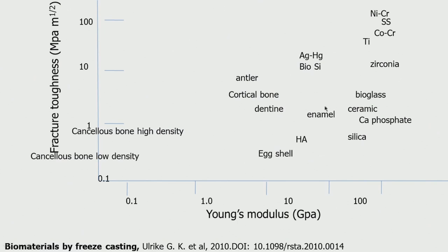Compared to bone or dental material — whereas if you take metals like nickel, chromium, stainless steel, they have very high Young's modulus and very high fracture toughness. Zirconia is not bad — it is coming up in fracture toughness. If you look at zirconia or bio-silica-based material or bioglass, they have quite high fracture toughness compared to other ceramic materials like bioglass, ceramic, calcium phosphate, silica, and hydroxyapatite. Eggshell has very very low fracture toughness — we are all used to that; if there is a crack, it fails immediately.